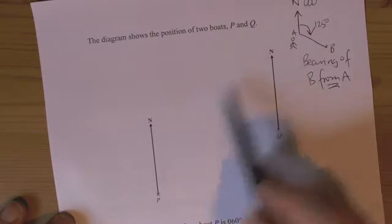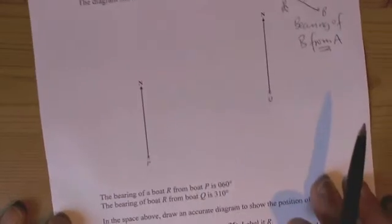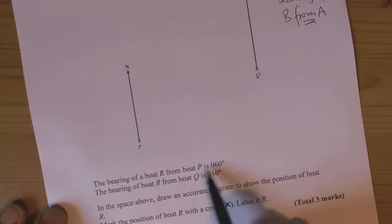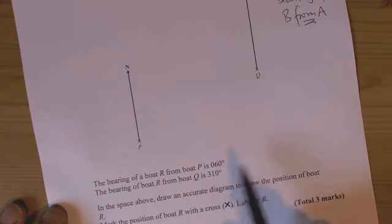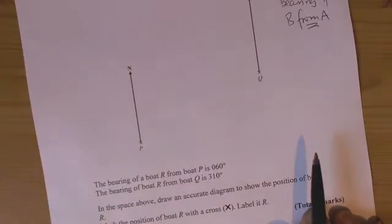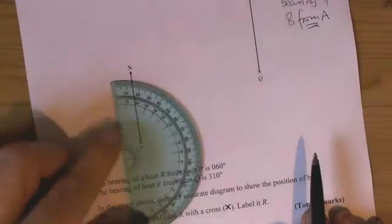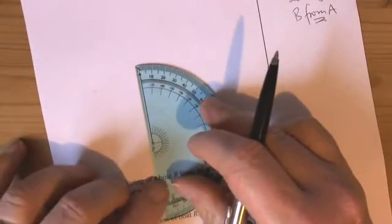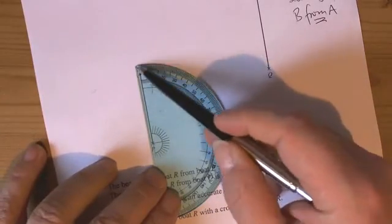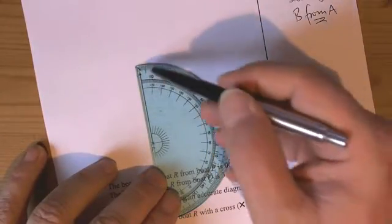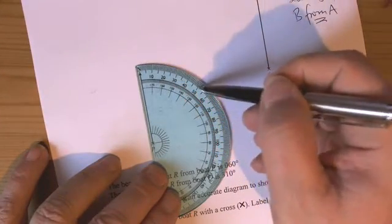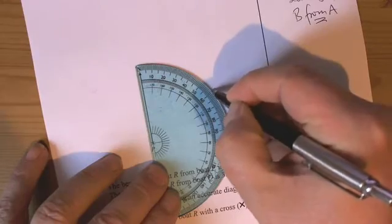So let's have a look at the kind of question they could ask us then. We've got two boats here, P and Q, and they're telling us that the bearing of another boat is, from P, is 060 degrees. So the idea here is that we get a protractor and we line up, now it's from P, so I put a protractor at P and I line up 0 with the north line and I count round 60 degrees. So 10, 20, 30, 40, 50, 60, and I put a mark down at 60 degrees.